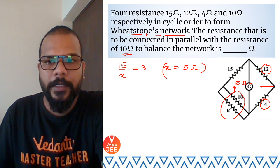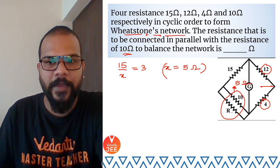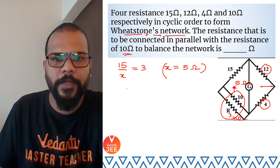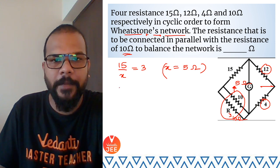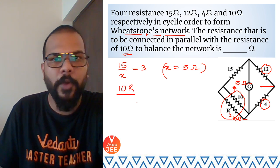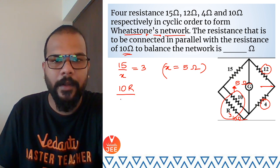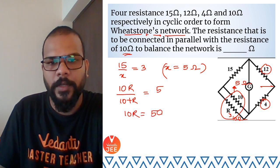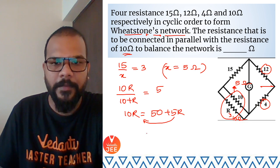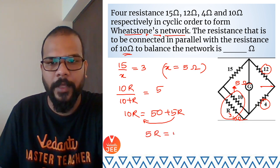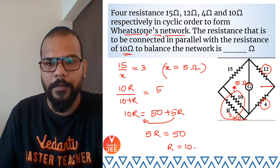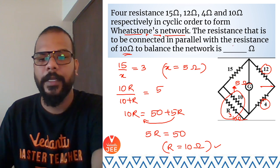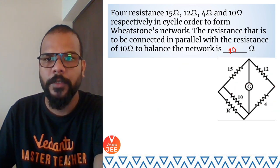Since 10 ohms in parallel with resistance R must give 5 ohms, we can intuitively see R = 10 ohms. Formally: R_parallel = (10 × R)/(10 + R) = 5, so 10R = 50 + 5R, giving 5R = 50, therefore R = 10 ohms. The answer is 10 ohms.